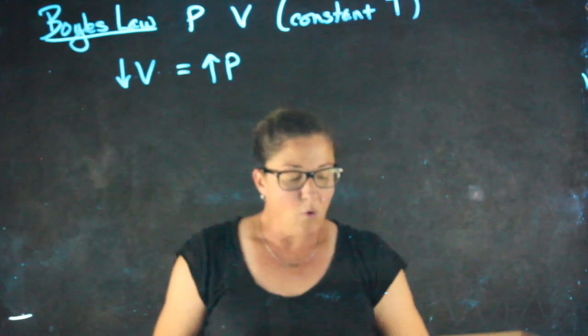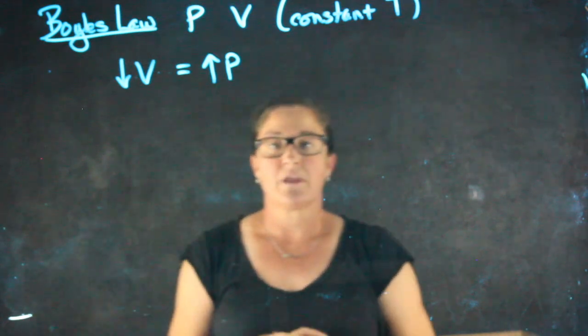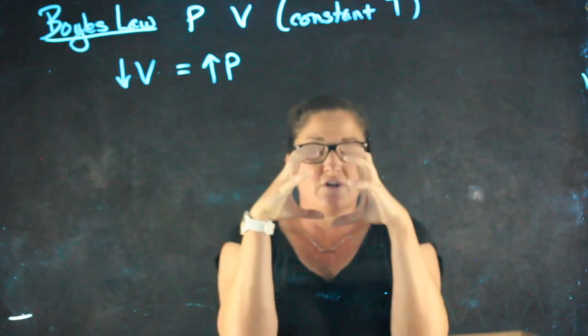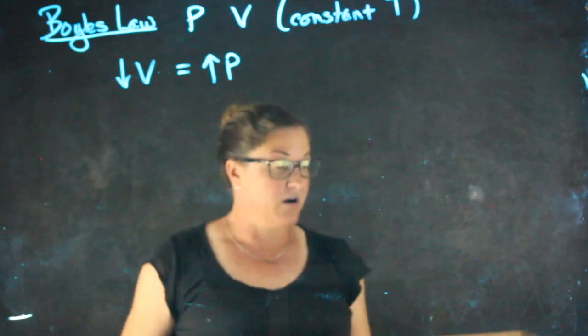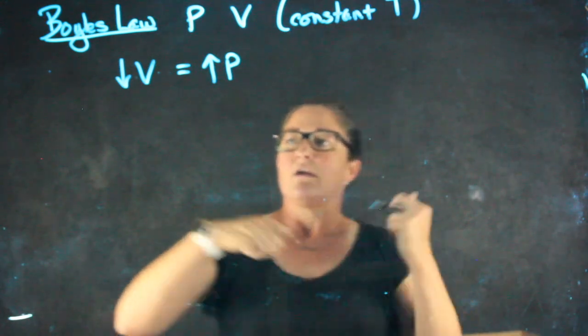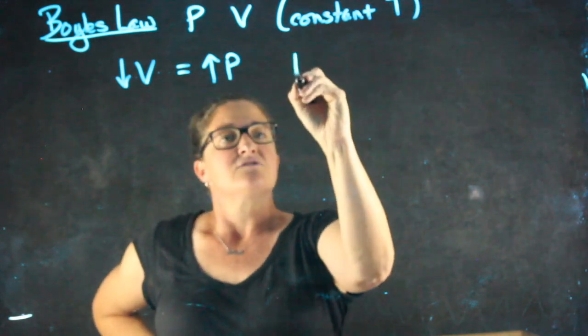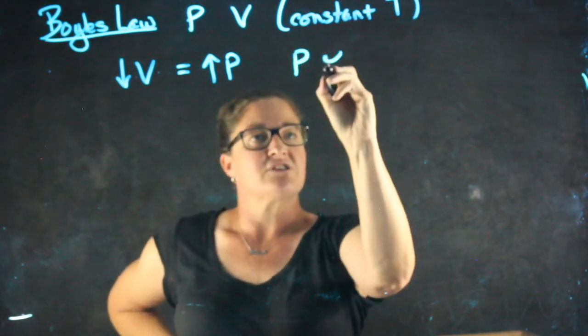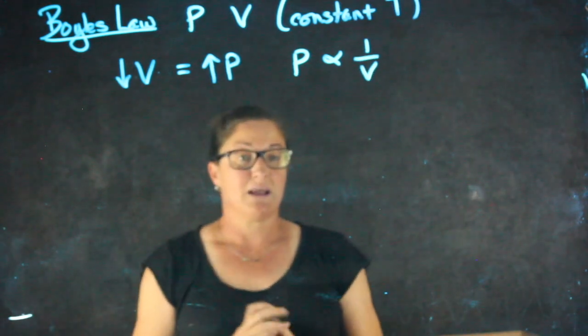The reason why is pressure is molecules colliding with the walls of the container. If I have a smaller volume, that means more molecules are colliding with any given part of the container wall. When one goes up and the other goes down, we call this an inverse relationship. So another way I can express this is pressure is proportional to 1 over volume, the alpha symbol meaning proportional to.